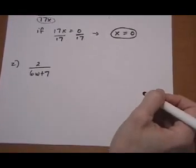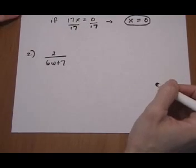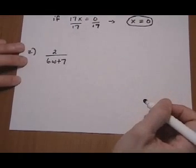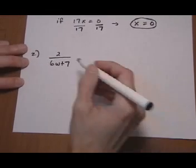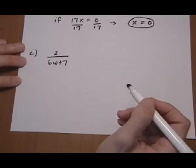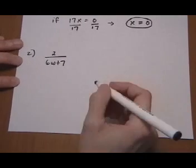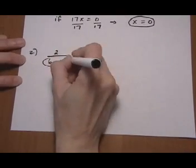Number two, same thing. We want to find out what values of w make the denominator zero, and we don't care what the numerator is. So even if there was a variable up in the numerator, we're not going to solve anything with the numerator. Just set the denominator equal to zero.